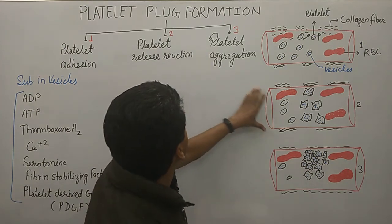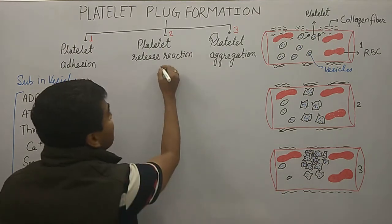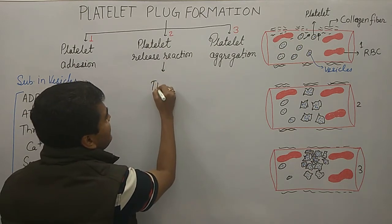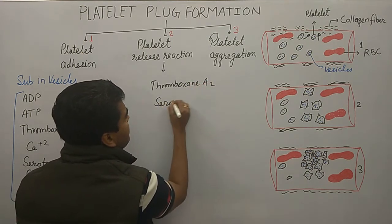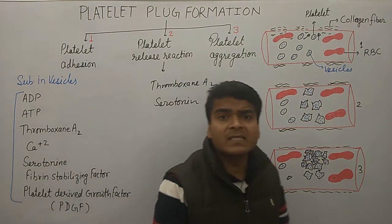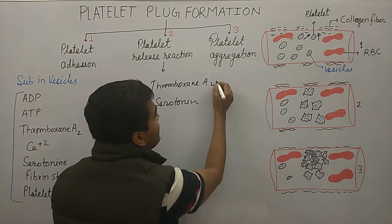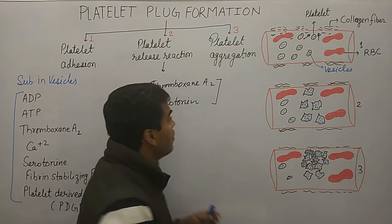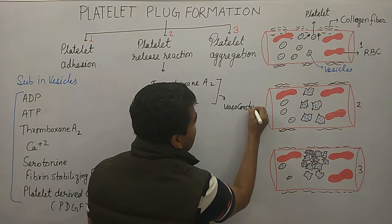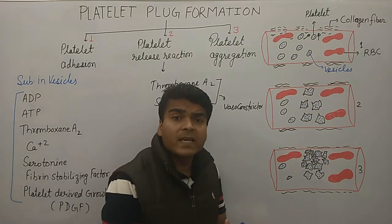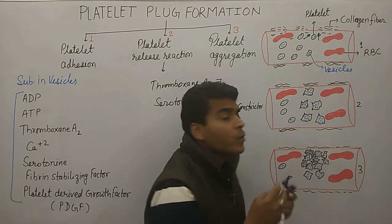The second step is platelet release reaction. In this reaction, there is a release of thromboxane A2 and serotonin. Both these substances are released. As I mentioned, both of these are vasoconstrictors — so they will cause vasoconstriction.